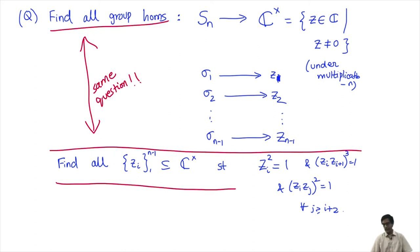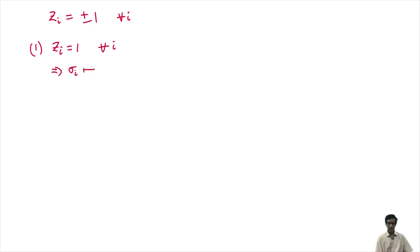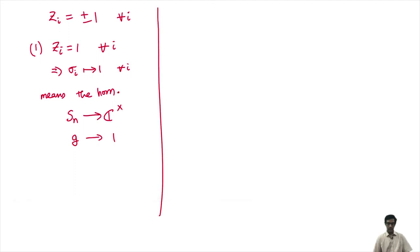Since zi² = 1 for all i, we conclude each zi can only be +1 or −1. Case 1: zi = +1 for all i. This gives the trivial homomorphism where every σi maps to 1, and hence every permutation maps to 1.